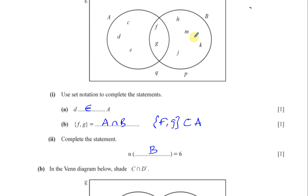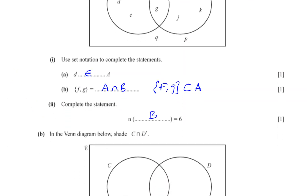Counting again: 1, 2, 3, 4, 5, 6. So N(B) means how many items are in that particular set.